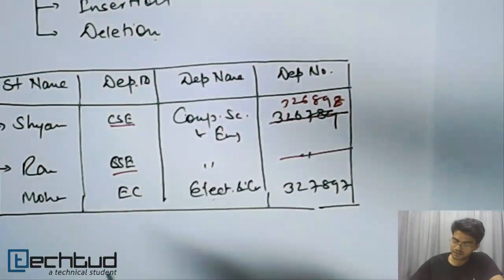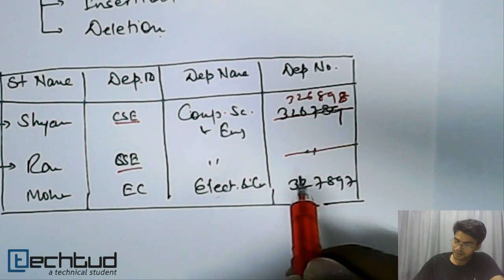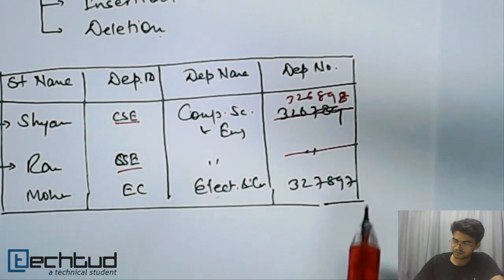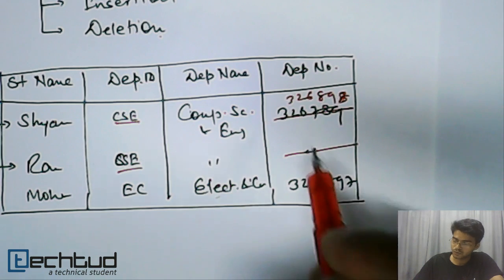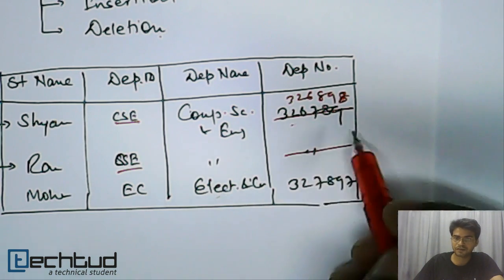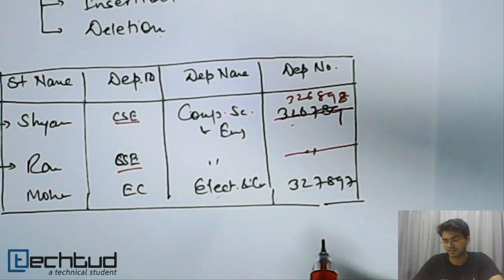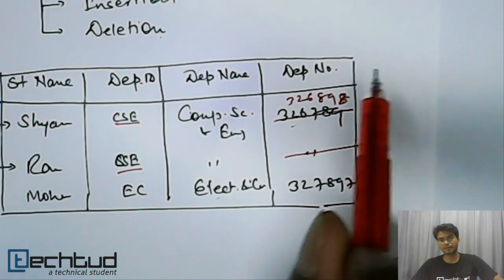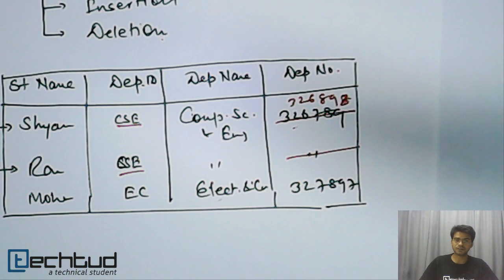The deletion anomalies: let's say I am deleting this department phone number for computer science. I have to delete it everywhere - wherever this is belonging to computer science department, all the phone numbers I have to delete. These anomalies we have to take care while designing the database.